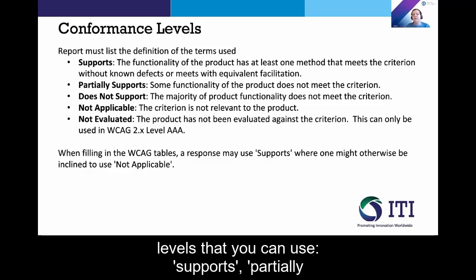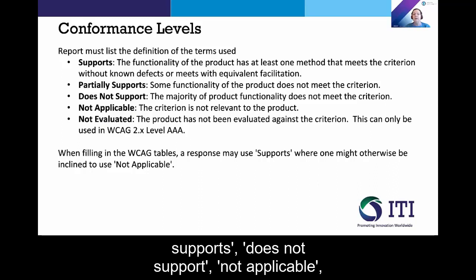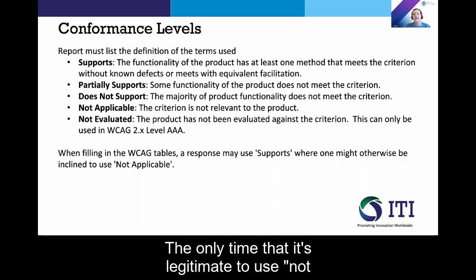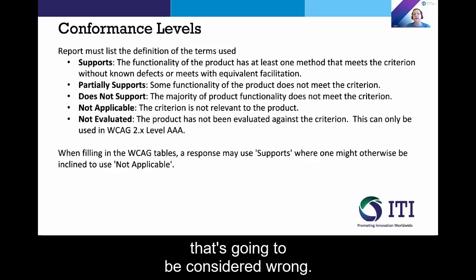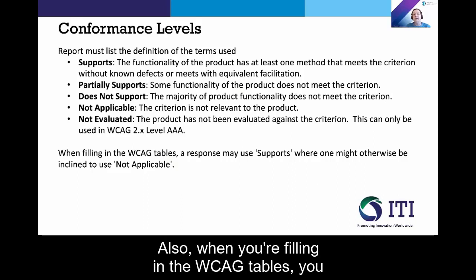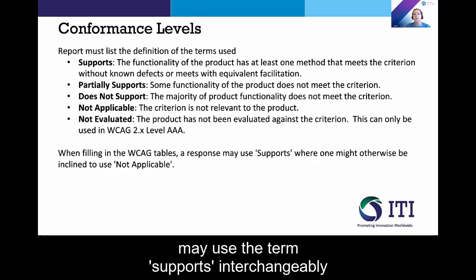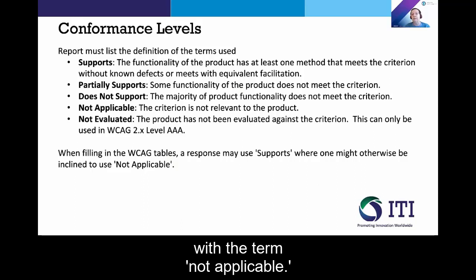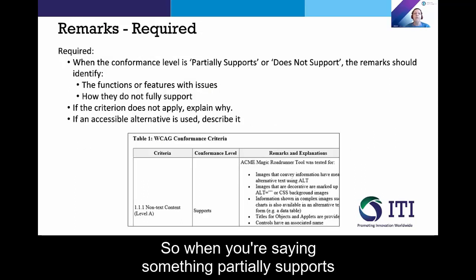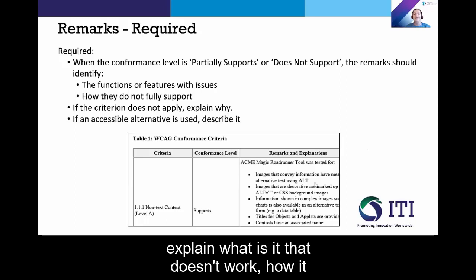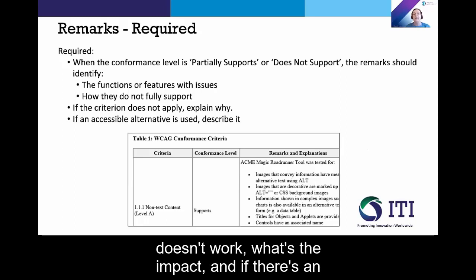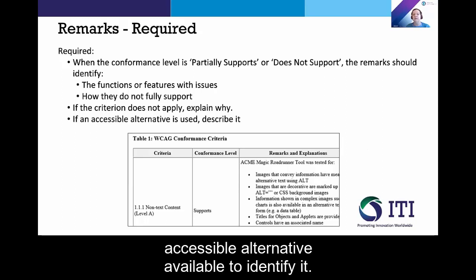There are five different conformance levels that you can use: supports, partially supports, does not support, not applicable, and not evaluated. The only time it's legitimate to use 'not evaluated' is for the WCAG 2.1 or 2.0 level AAA guidelines. If you use 'not evaluated' under another condition, that's going to be considered wrong. Also, when you're filling in the WCAG tables, you may use the term 'supports' interchangeably with 'not applicable.' When you're saying something partially supports or does not support, you must include remarks that explain what doesn't work, how it doesn't work, what the impact is, and if there's an accessible alternative available, to identify it.